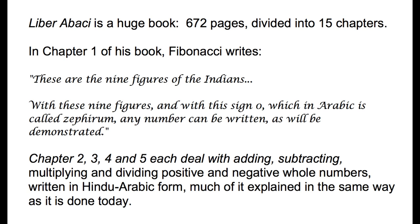The book in which these Fibonacci numbers first appear is called Liber Abaci, and it's a huge book — 672 pages, divided into 15 chapters. In Chapter 1, Fibonacci writes: 'These are the nine figures of the Indians,' referring to the numbers from India that he's introducing to Europe. He says, 'With these nine figures and with the sign zero — which in Arabic is Zephram — any number can be written, as will be demonstrated.' He's saying that with the digits one through nine and zero, you can write any number.